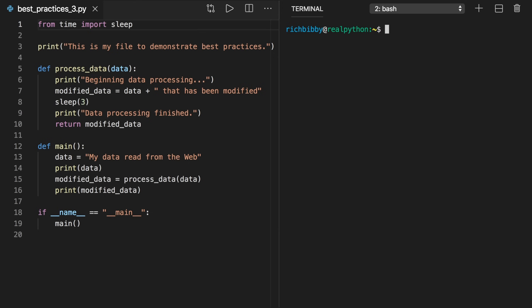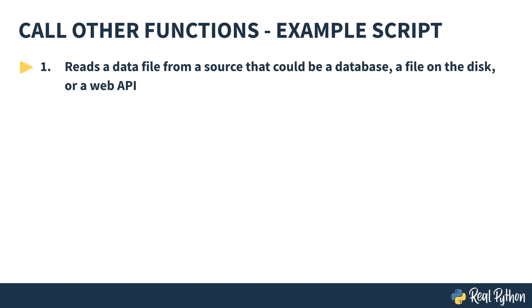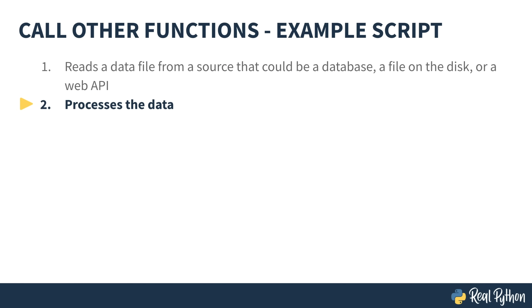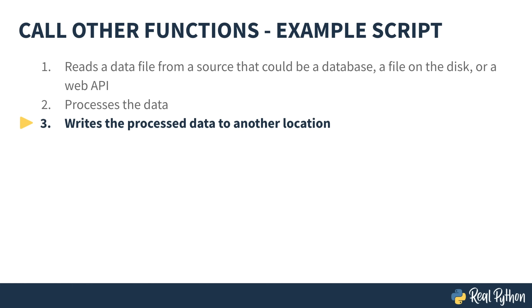Another common practice in Python is to have the main function execute other functions rather than including all the task-accomplishing code in main. This is especially useful when you compose your overall task from several smaller subtasks that can execute independently. For example, you may have a script that reads a file from a source — such as a database, a file on disk, or a web API — processes the data, and writes the processed data to another location. If you implement each of these subtasks in separate functions, then it's easy to reuse a few of the steps and ignore the ones you don't want. You can then create a default workflow in main. Whether to apply this practice is a judgment call — splitting work into several functions makes reuse easier but increases difficulty for someone else interpreting your code because they have to follow several jumps in the program flow.